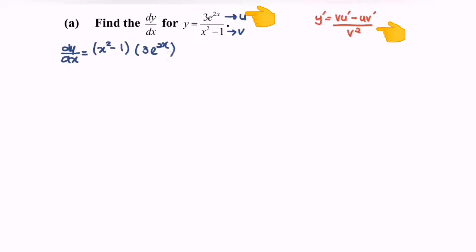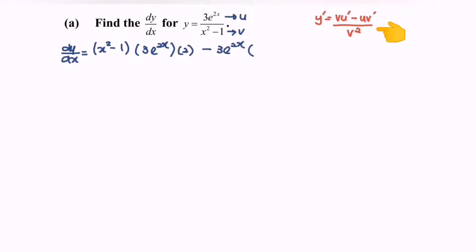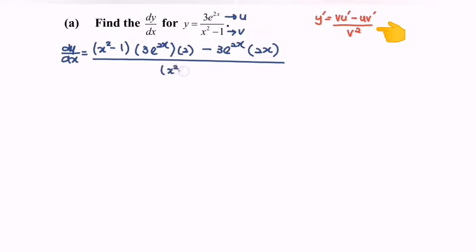Kindly focus on the power — differentiate the power. Minus, now we have u, which is 3e to the power 2x, multiplied with v prime, over x squared minus 1 to the power of 2.